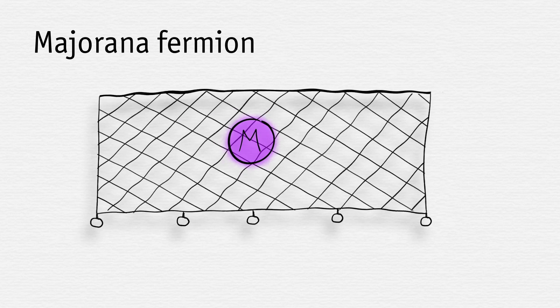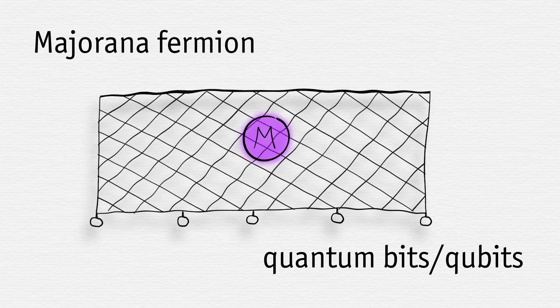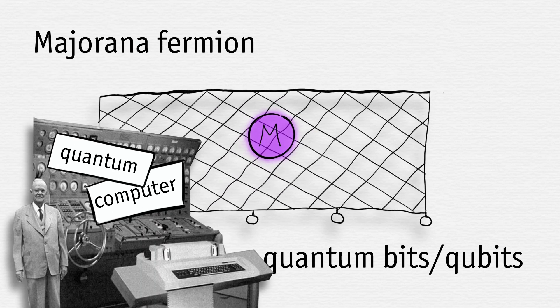Majorana fermions can be used for making quantum bits or qubits, the basic building block of a quantum computer, which can solve specific calculations very quickly.